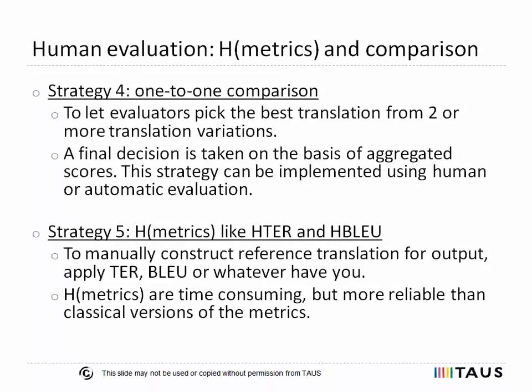TAUS members should note that all four human evaluation strategies outlined so far — adequacy-fluency, ranking, one-to-one comparison, and machine translation post-editing — as well as more detailed error typology analysis, are available to you as part of the suite of TAUS Dynamic Quality Framework shared tools for machine translation evaluation.